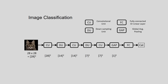The CNN structure for image classification is like this: we have the input image, then the convolutional unit (CU), then the down-sampling unit (DU), then convolution again, down-sampling, convolution, global average pooling, and finally the fully connected layer (FC) for classification. That is the CNN.